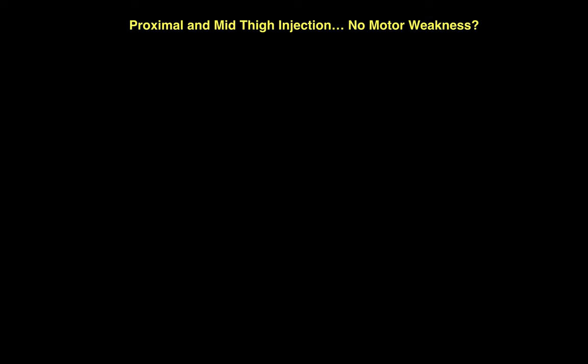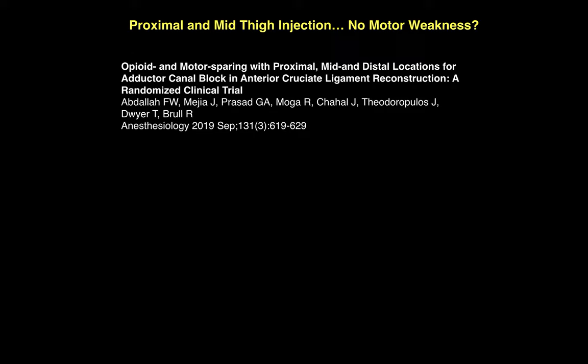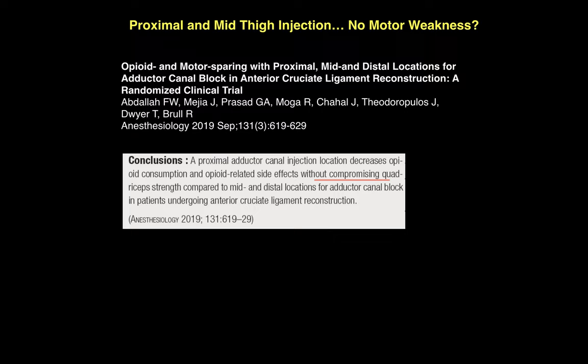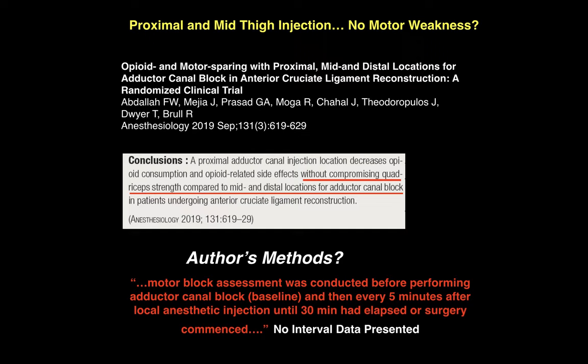Study methods must also be very carefully vetted before assuming more proximal injection does not cause motor weakness. For example, investigators in this recent trial state that proximal weakness will not occur after more proximal injection. However, examination of their methods shows that the most important metric, namely motor effect, was tested only every 5 minutes for 30 minutes or until surgery commenced. These methods are very concerning since 30 minutes is a very brief interval to assess full motor effect. Even worse, many of these patients may have only been assessed once or twice—in other words, for 5 to 10 minutes before surgery commenced. We are not provided any interval data for which patients went a full 30 minutes of evaluation and which patients may have been only tested once or twice, in other words, for only 10 minutes.